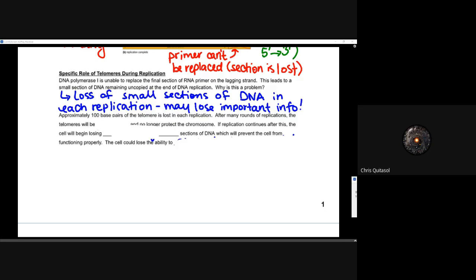So if approximately 100 base pairs of the telomerase are lost in each replication, after many rounds of replication, you would expect the telomeres to be gone and no longer protect that chromosome. If the replication continues after this, the cell will begin to lose that coating section of the DNA that's responsible for performing cellular function. This could lead to the loss of the ability of the cell to grow, divide, and metabolize any and all things, a.k.a. getting old and slowly having your cellular processes degrade and fade away, i.e. kick in the bucket, for lack of a better word.